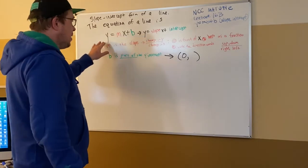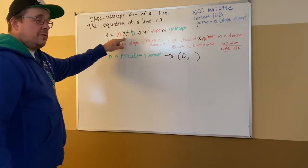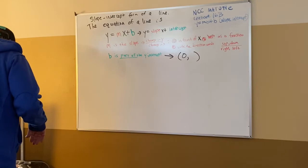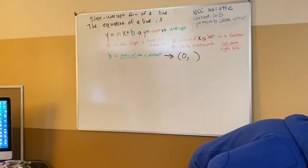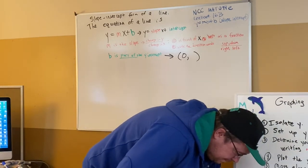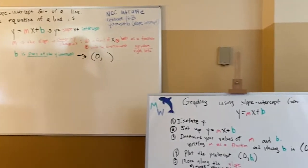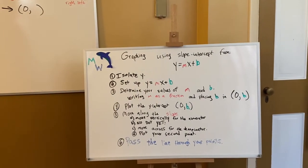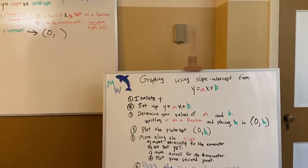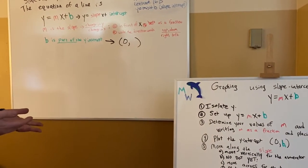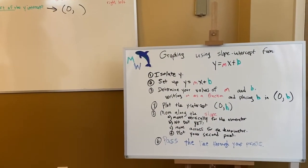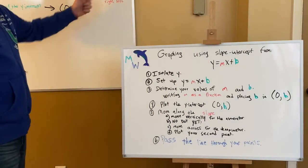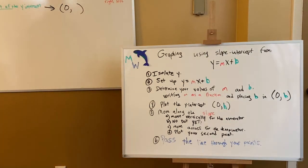When we get y equals mx plus b, you might recognize why I've been having you put the x term in the middle. Y is first, then the equal sign, followed by the mx term plus b, so you can find the slope and intercept. Now I'm going to show you the steps we use for any graphing using y equals mx plus b. It begins with y equals every single time. If you don't have an isolated y, you need to isolate y.